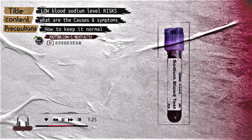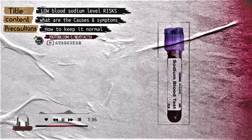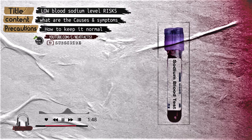Taking certain medications, including antidepressants and pain medications. Taking diuretics or water pills. Drinking too much water during exercise — this is very rare. Dehydration. Kidney disease or kidney failure. Liver disease. Heart problems, including congestive heart failure. Adrenal gland disorders, such as Addison's disease, which affects your adrenal gland's ability to regulate the balance of sodium, potassium, and water in your body.